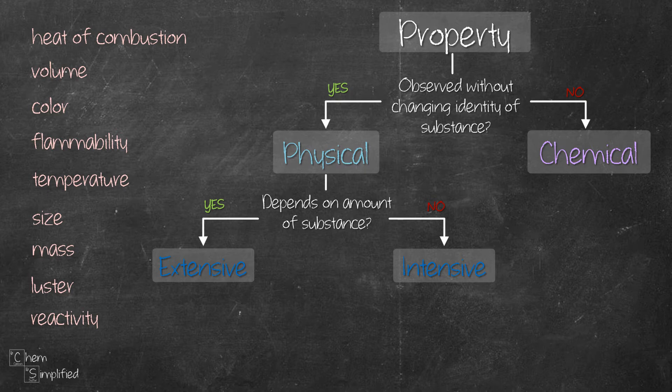We'll start with the first one: heat of combustion. It's the amount of heat that's released when a substance is burned in oxygen. In order to measure the heat released, the substance will need to react with oxygen and form different substances — meaning its chemical identity will definitely change. So that makes heat of combustion a chemical property.